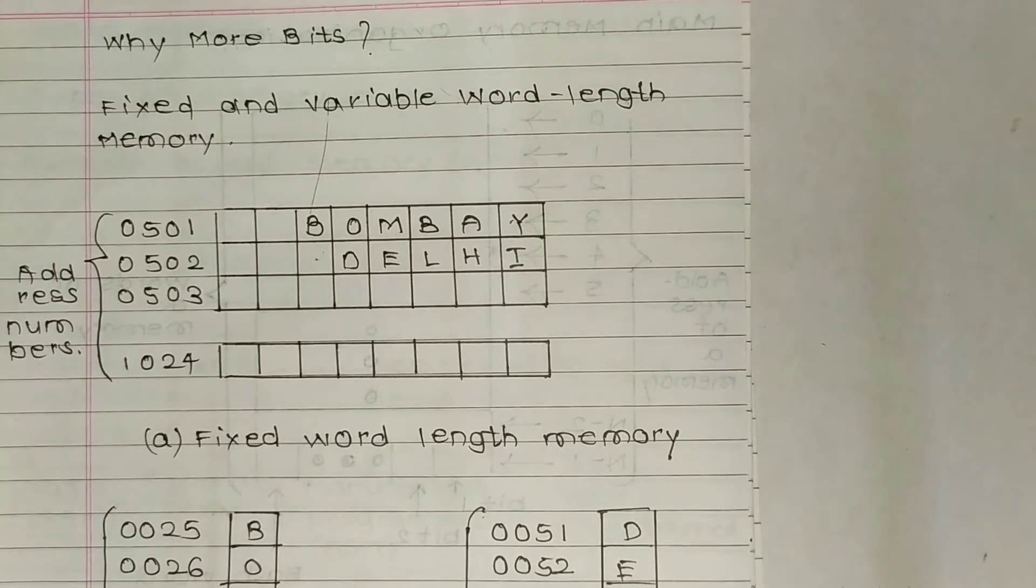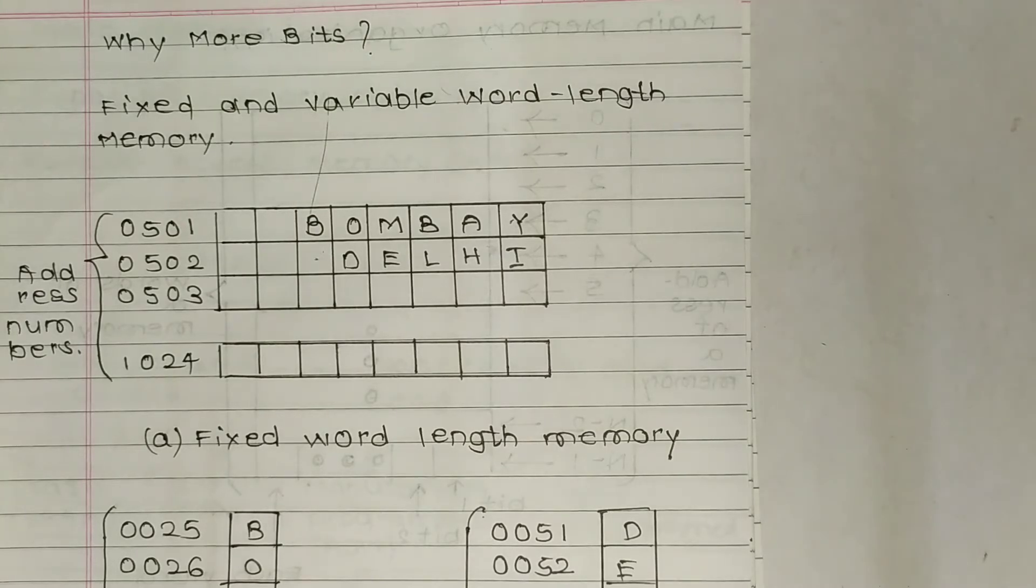In many computers, main memory is designed to store a single character - A, B, numbers 1, 2, signs like plus, minus, etc. - at each numbered address. Computers designed in this manner are said to be character addressable and they employ variable word length memory approach. Hence in these computers, only three bytes are required to store the word 'cat' and six bytes to store the word 'bombay'.